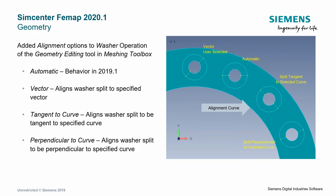Another improvement to the geometry manipulation capabilities of FEMAP is that you can now specify the vector along which your washer is split. Previously, automatic was just the default behavior — FEMAP just decided for you. But now you can specify the vector via a vector selection dialog, or you can specify a curve and FEMAP will find the tangent vector to that curve at the closest point, or the perpendicular vector to that curve.